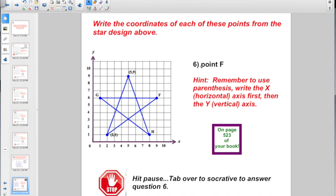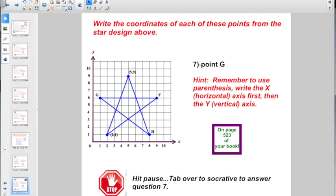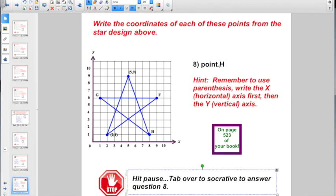Anytime you're given directions on how to draw lines between your coordinates, you want to insert a little arrow between your coordinates. Now they're going to tell you to write the coordinates of each of these points from the star design above. Question number 6, they want to know the coordinates for point F. Remember to use parentheses, write the X horizontal axis number first, then the Y vertical axis. Hit pause. And one more, what are the coordinates to point G? And one more just like that one, what are the coordinates to point H?